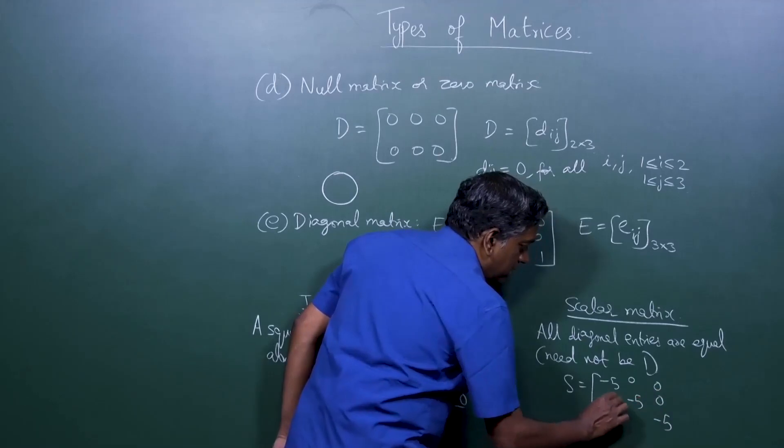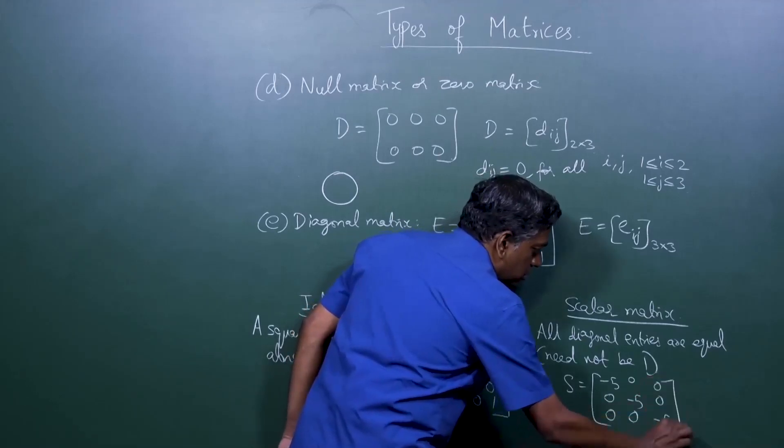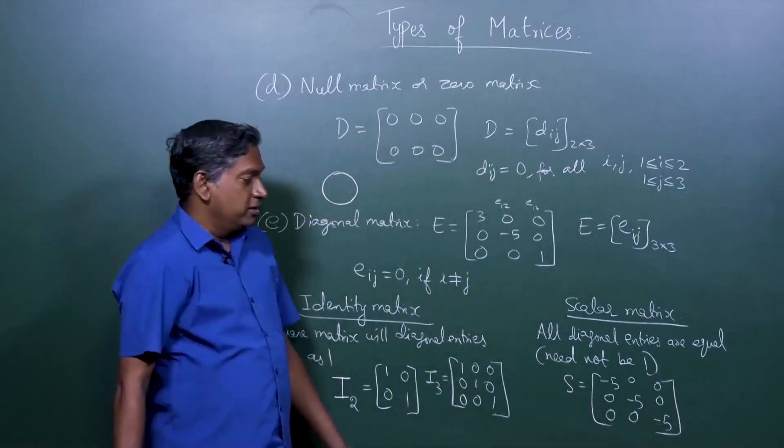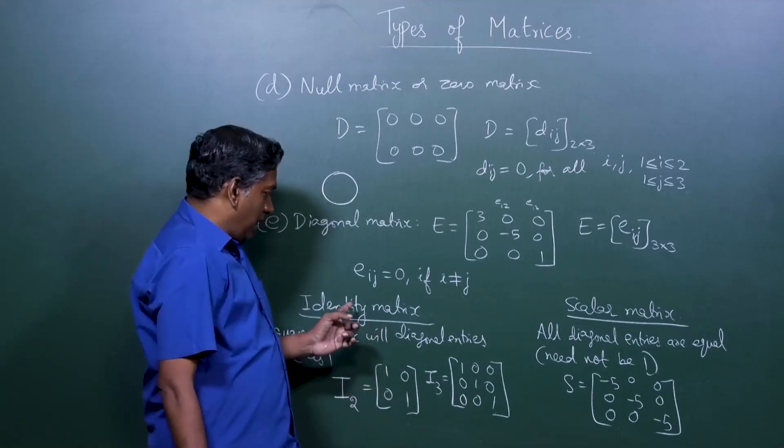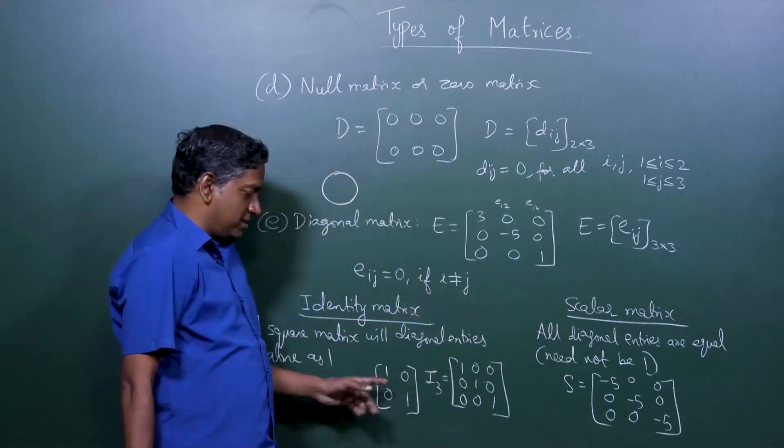Both of these come under diagonal matrix. For example, S is a scalar matrix. If this is minus five, minus five, minus five, all the other entries are zero.